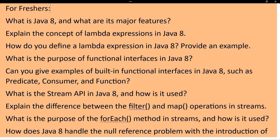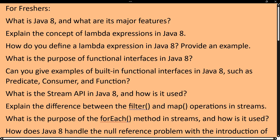The first question is: what are the major features in Java 8, can you explain all of them? The second question is: explain the concept of lambda expressions in Java 8 — what is a lambda expression and why we use them. If you have 0 to 5 years of experience, the next question is: how do you define a lambda expression in Java 8? Provide some real-time examples — what type of lambda expressions, how you define them, and where you used them in your project.